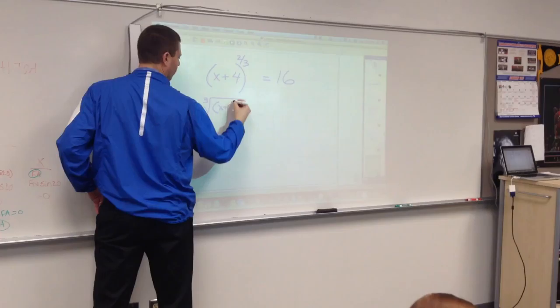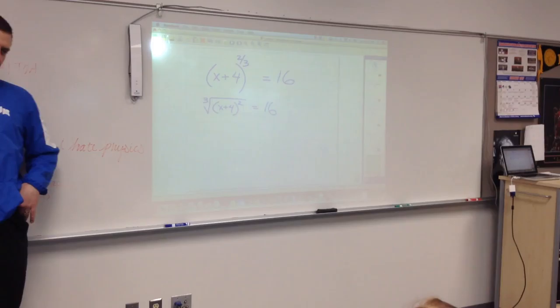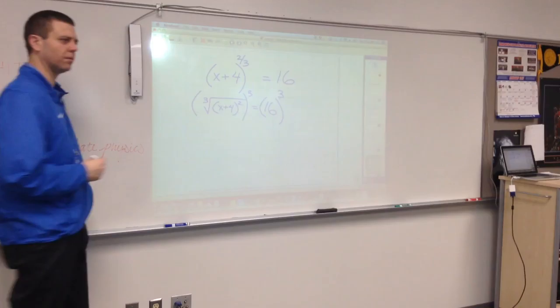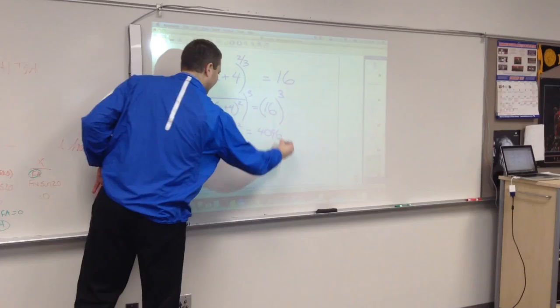Change it to radical, what would it look like? Cube root of x plus 4 squared equals 16. So if you do that, then what are you going to do to both sides next? Cube it, raise it to the 3rd power, right? I'm going to need some help there. I can do 16 times 16, but I can't do 16 times itself 3 times. 4,096. So I have x plus 4 squared equals 4,096.